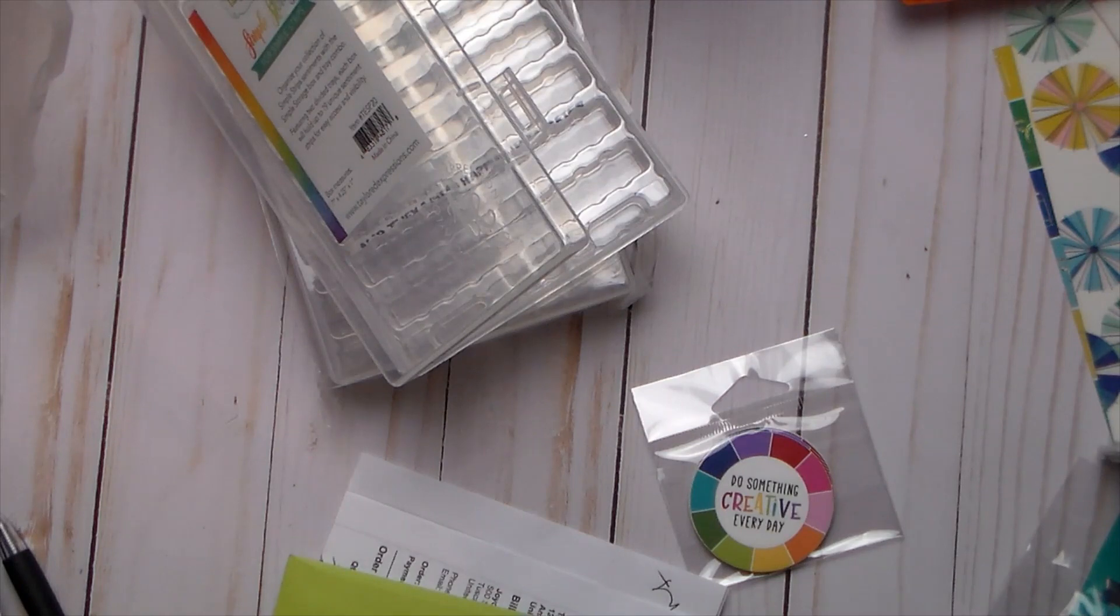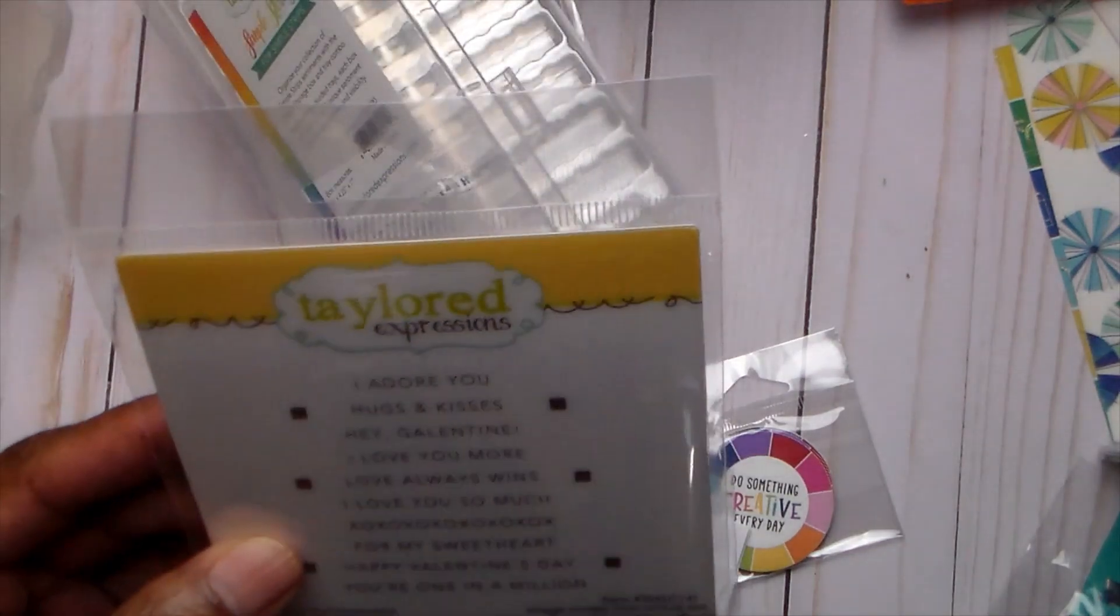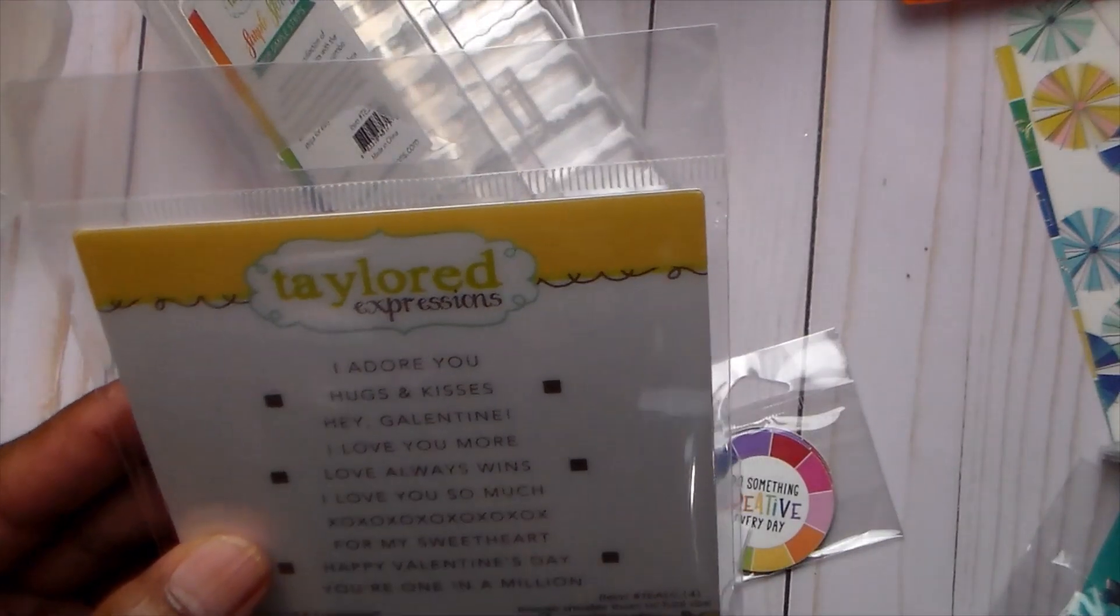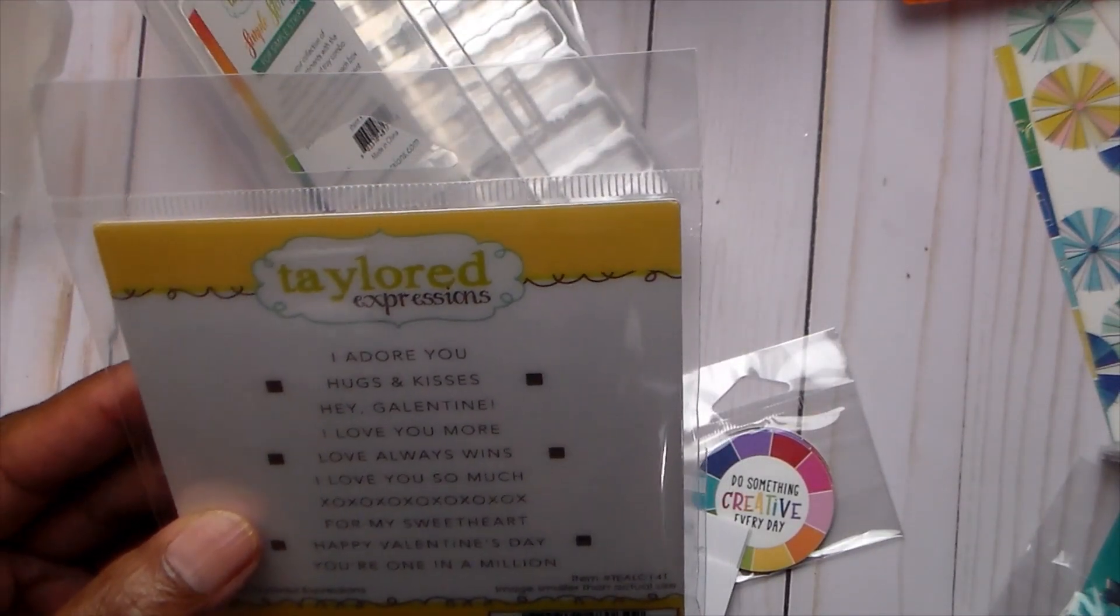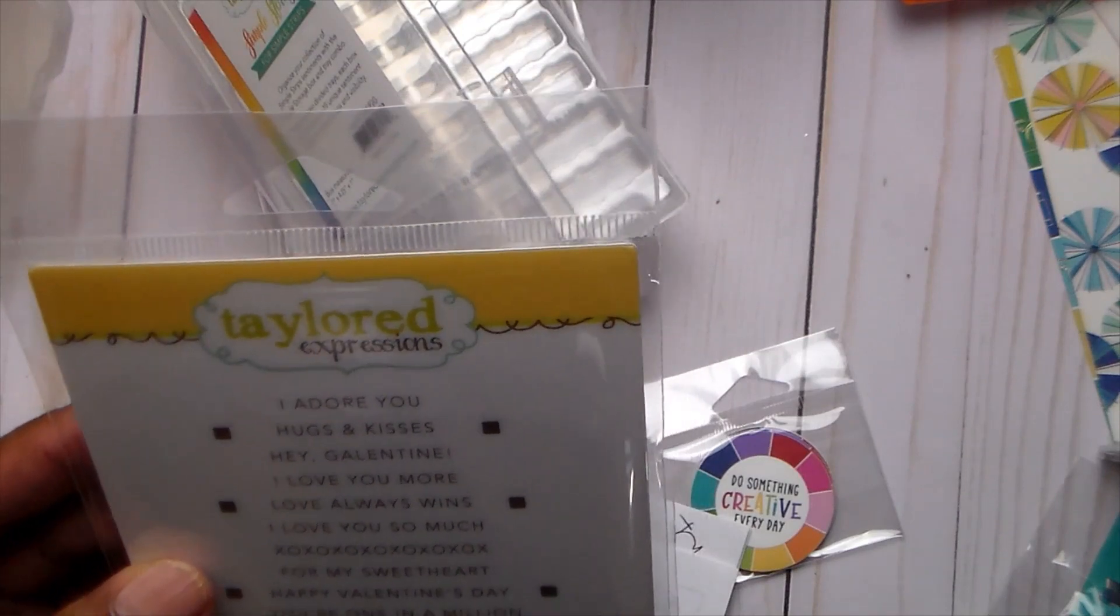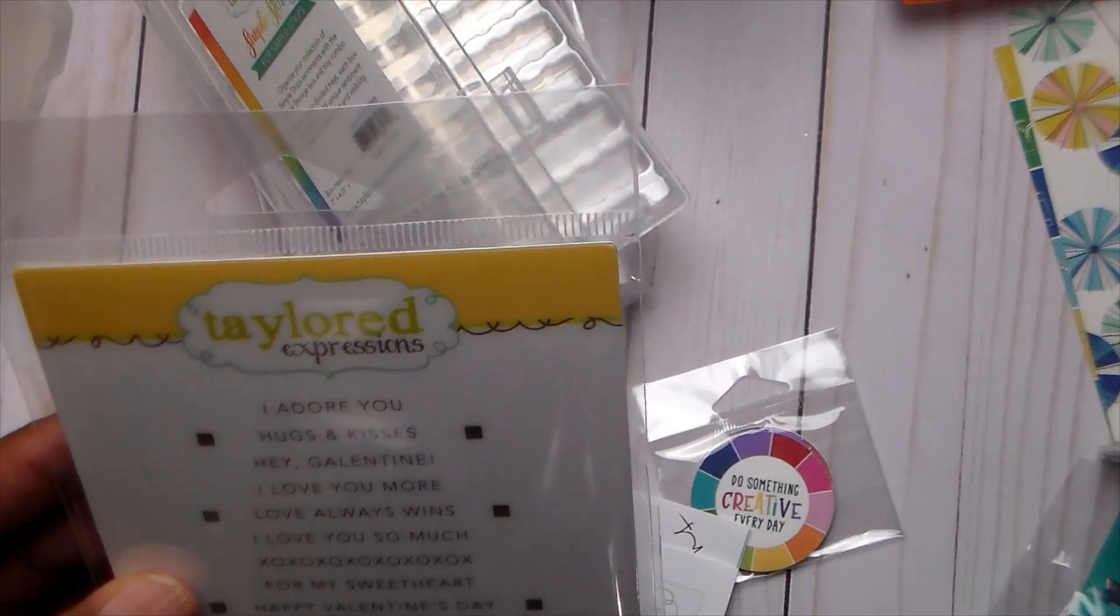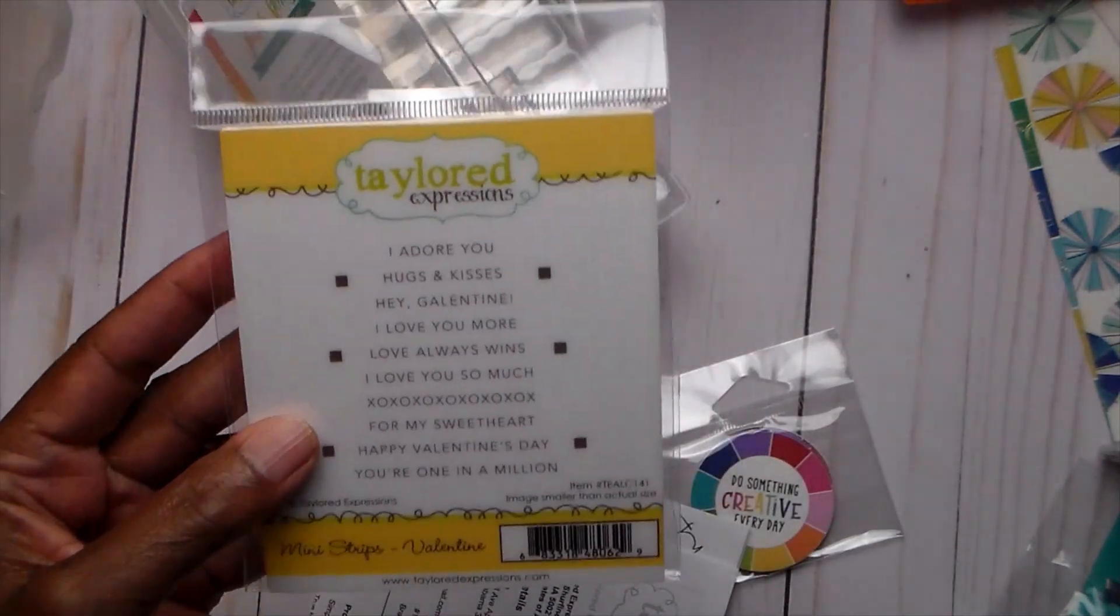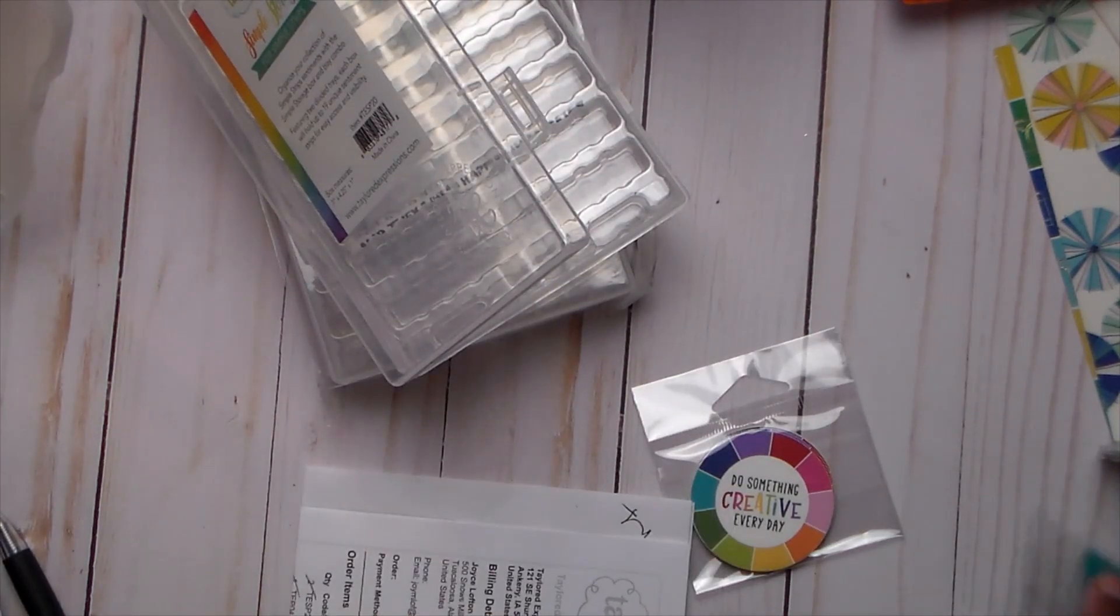So let's move that and then I bought this other, the mini strips. I didn't have the Valentine one so I bought that and it just says 'I adore you,' 'hugs and kisses,' 'hey Galentine,' 'I love you more,' 'love always wins,' 'I love you so much,' 'XOXO,' 'for my sweetheart,' blah blah blah. So I got that. Like I said, this was a very small haul and I was really getting those.